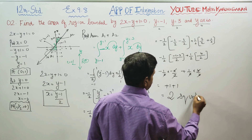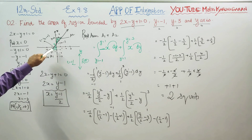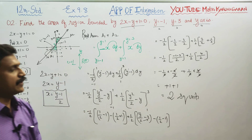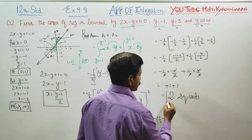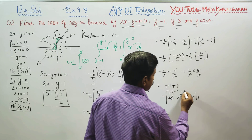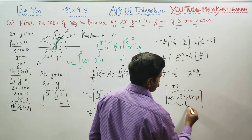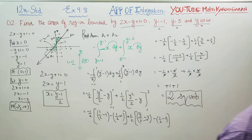The total area, shown in the greenish dotted part, is 2 square units. This is your final and exact answer. Thank you.